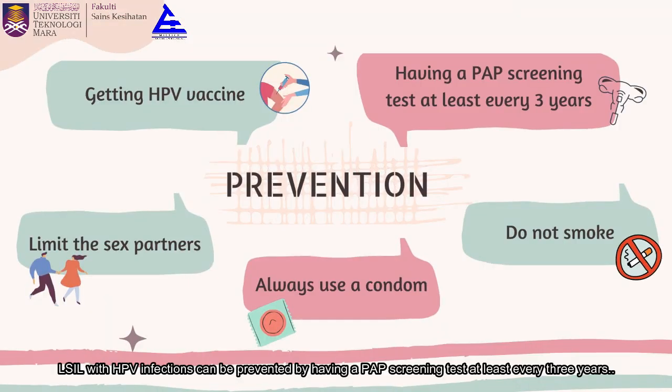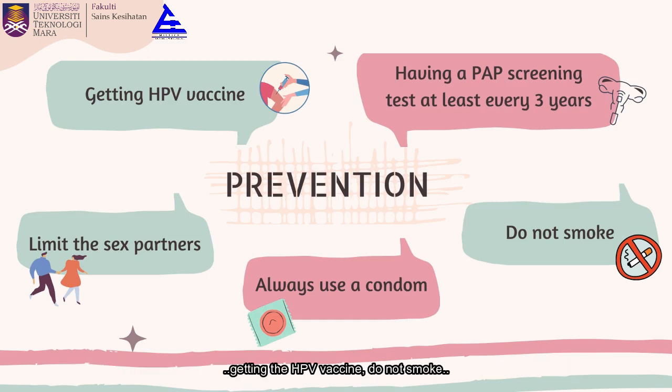LSIL with HPV infections can be prevented by having a Pap screening test at least every three years, getting the HPV vaccine, not smoking, always using a condom, and limiting sex partners.